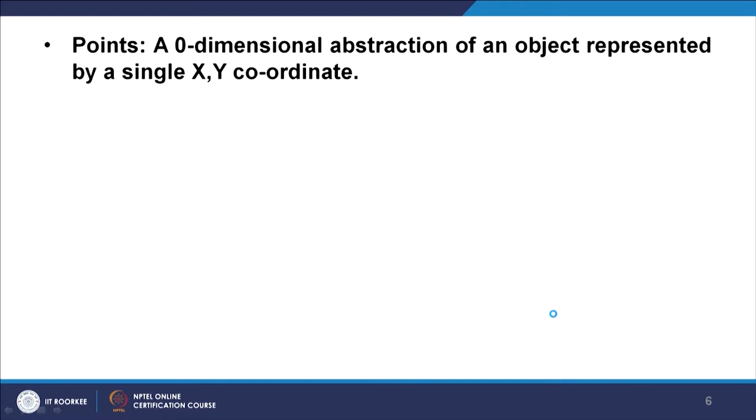In GIS, we consider a point as a 0-dimensional vector entity. Why? Because a point is nothing but just an x, y — a single pair of x, y. And therefore, you do not have anything to measure with a single point. Of course, between 2 points you can definitely measure the distance, but a single point will have just one pair of coordinates, that is x and y. The Z value — meaning elevation or any other attribute information — will go as non-spatial data in our system.